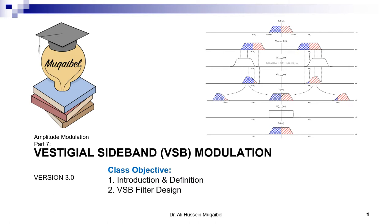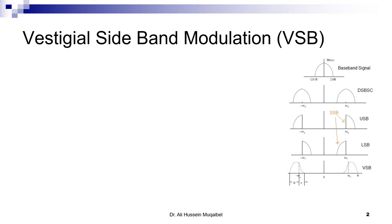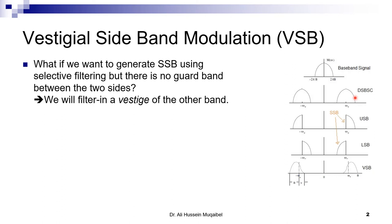Vestigial sideband modulation: if you remember, we started with the message — this is a baseband signal — and to go to double sideband suppressed carrier we multiply by cosine. Once you get to double sideband, you can use filters to get a single sideband. If you filter one side you get the upper sideband, or if you filter the lower side you get lower sideband single sideband. We have two types of single sideband.